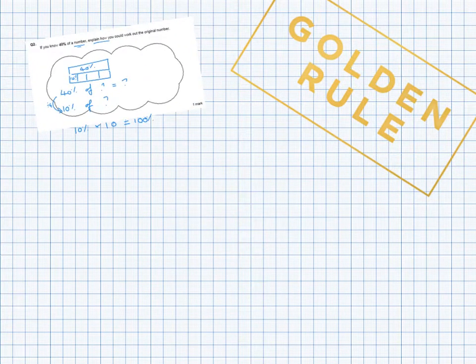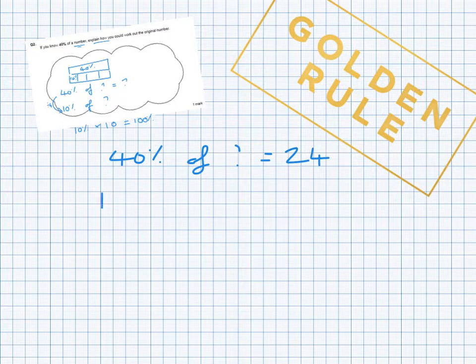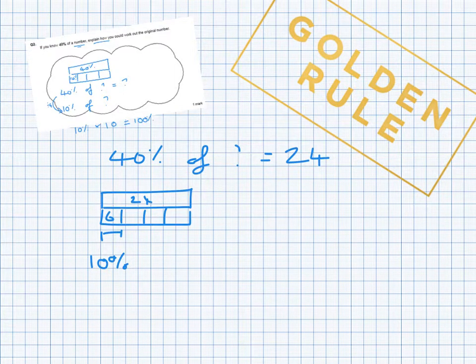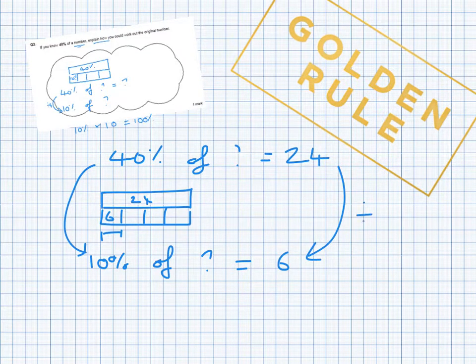Let's have a look at that as an example. If you know 40% of a number, explain how you can work out the original number. So imagine we knew 40% of that number was 24. So 40% of my number is 24. So 10% of my number is 6. Because 40 divided by 4, divide 24 by 4 as well, gives me 6.